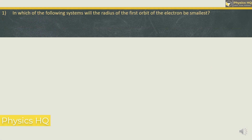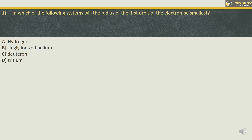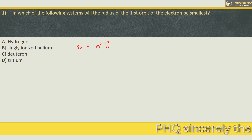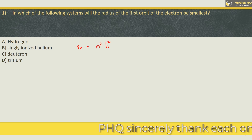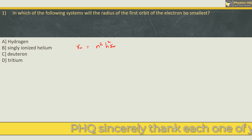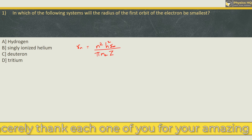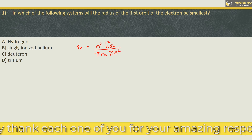In which of the following systems will the radius of the first orbit of the electron be smallest? The options are: hydrogen, singly ionized helium, deuteron, or radium. Now let us first write down the formula for radius for a given orbit. The radius of the nth orbit is given as n² h² ε₀ divided by π × mass of electron × atomic number Z × e².